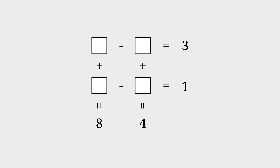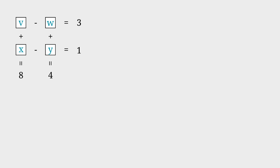In this video we'll look at this puzzle. Let's label these boxes as V, W, X and Y such that V minus W is 3, X minus Y is 1, V plus X is 8, and lastly W plus Y is 4. Let me know how you would have done it in the comments. I'm going to use a system of equations to solve this puzzle simultaneously. The answer at the end will be quite neat so stick around.